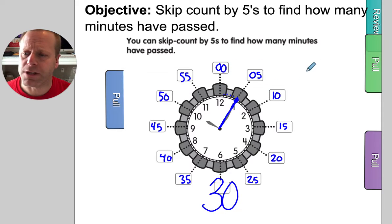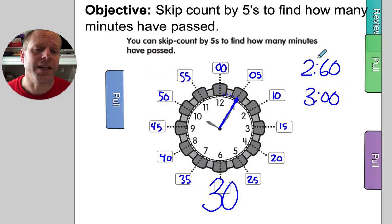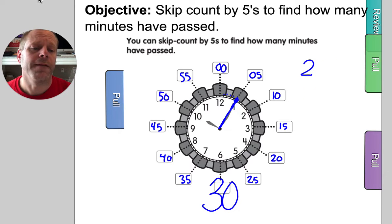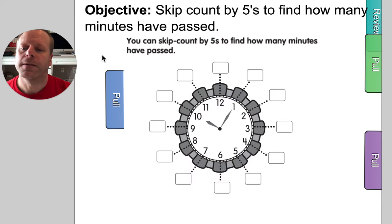The reason I put the zero there is we don't ever say we have 2:60. We would just say that is 3 o'clock. So if you have a 60, you're just going to carry that over into the next hour. I want you to feel good about knowing where the 60 is, where the zero is, and where the 30 is. It's good to know those two for sure.